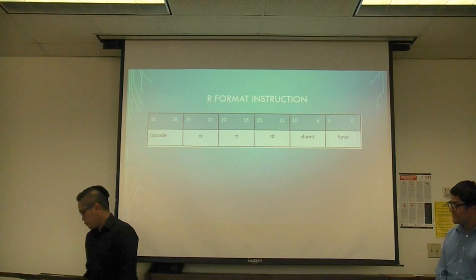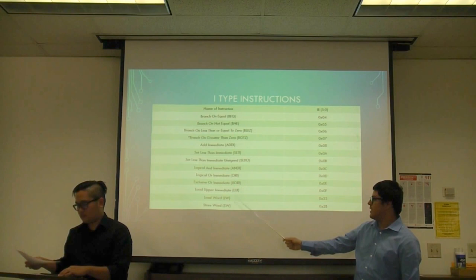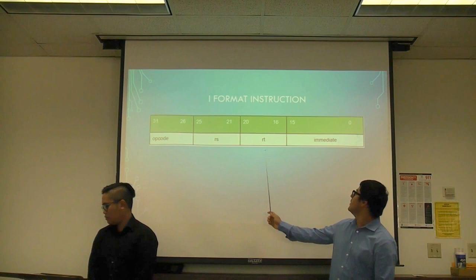Here are our I-type instructions. We have branch on equal, all the branches, then we also have add immediate, all the way down to load word and store word. This is our I format instruction: we have an opcode, RS, RT, and a 16-bit immediate value. RT is considered the destination register when doing any type of arithmetic operation.